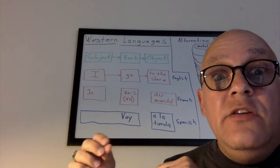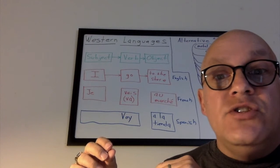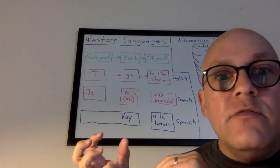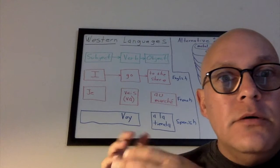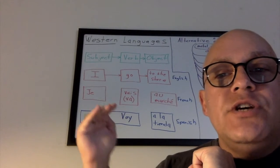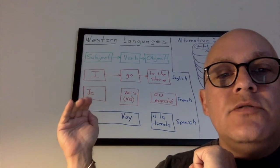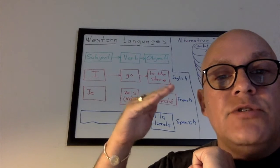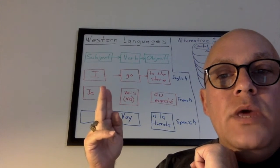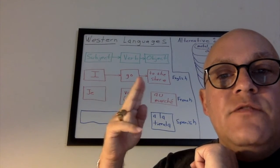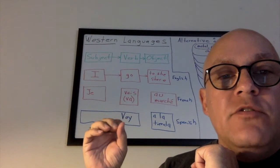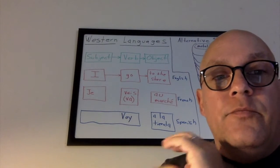Some of the eastern languages have a great deal contained in the form of the noun and verb. So in just three western languages — English, French, and Spanish — we see subject, verb, object, but we also see a little bit of abstraction even when we go to Spanish, which is still a western language.